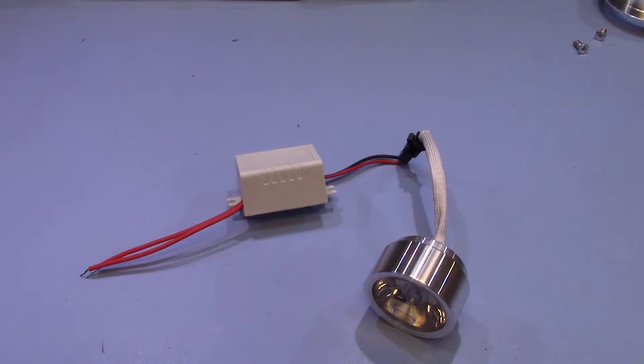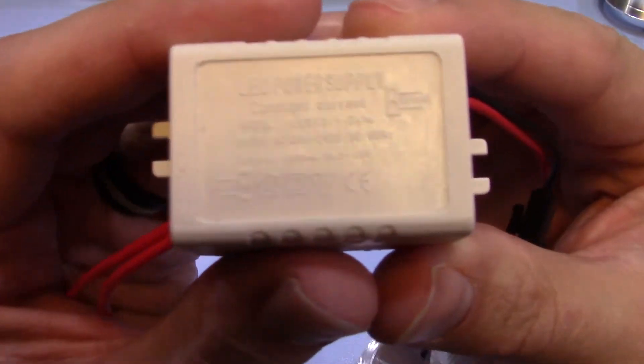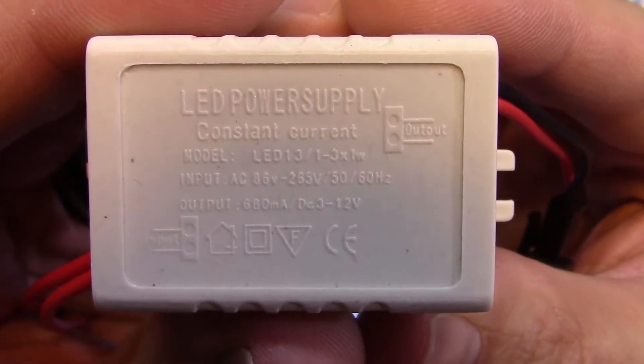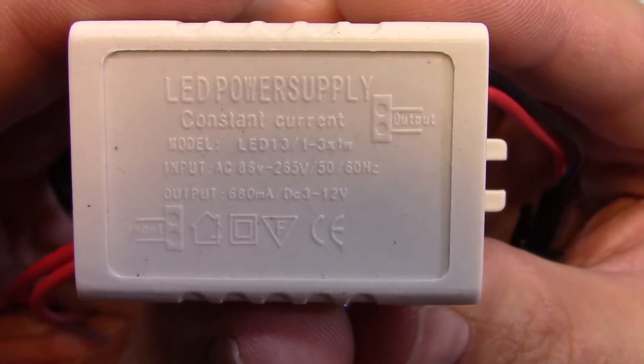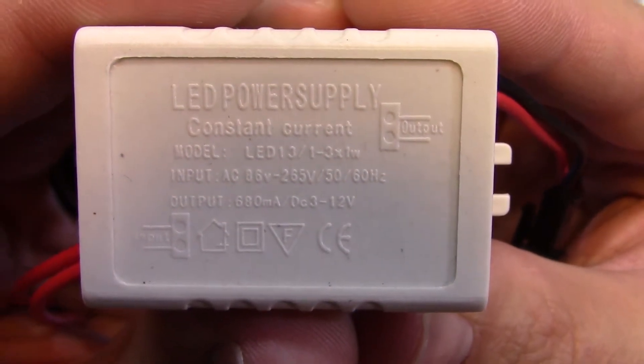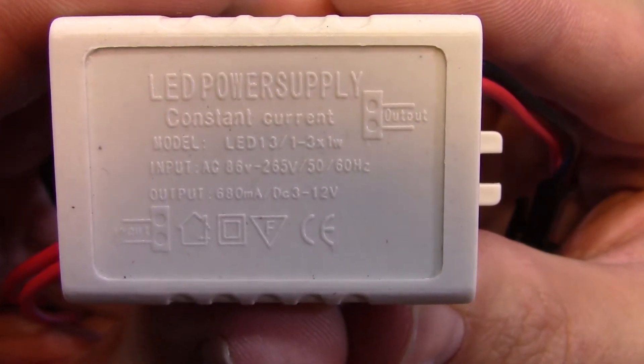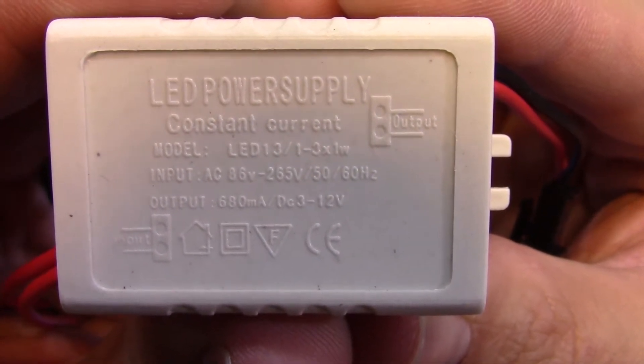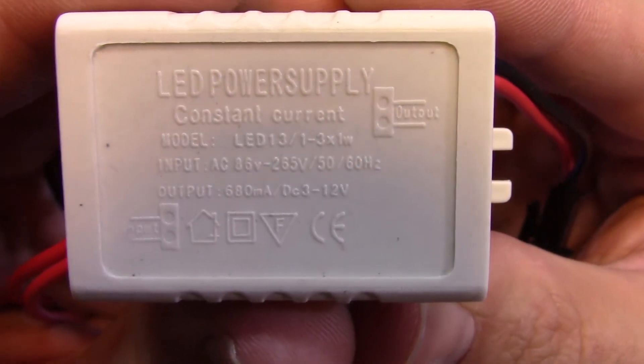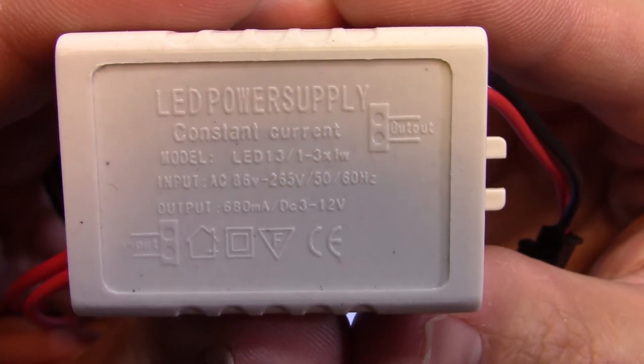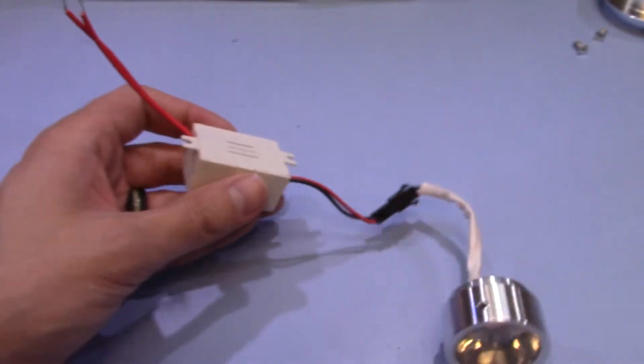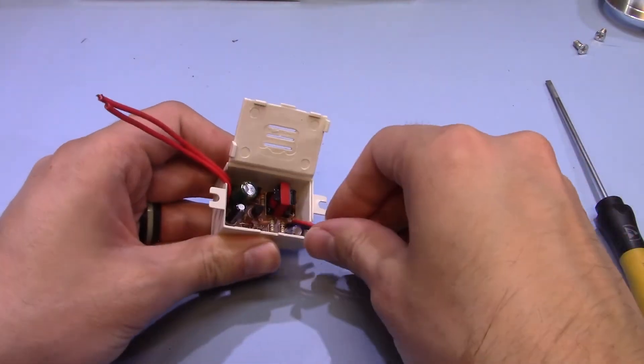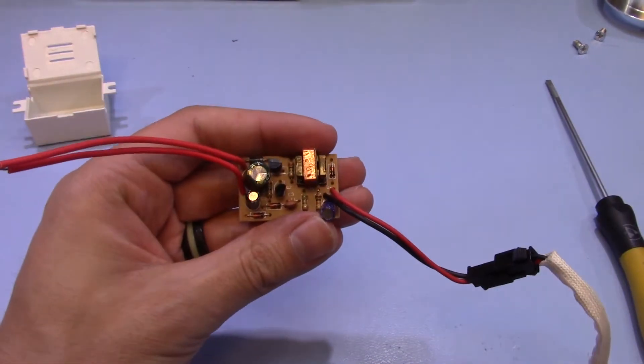We'll have a look inside the LED driver. On the front it says it's a constant current driver supporting 86 to 265 volt input and the output current is 680 milliamps at 3 to 12 volts. But that must be a misprint because even at just 3 volts you'd be supplying over 2 watts to the LED, and we weren't reading that on the power meter. I suspect they just used a generic case with sort of the correct information.